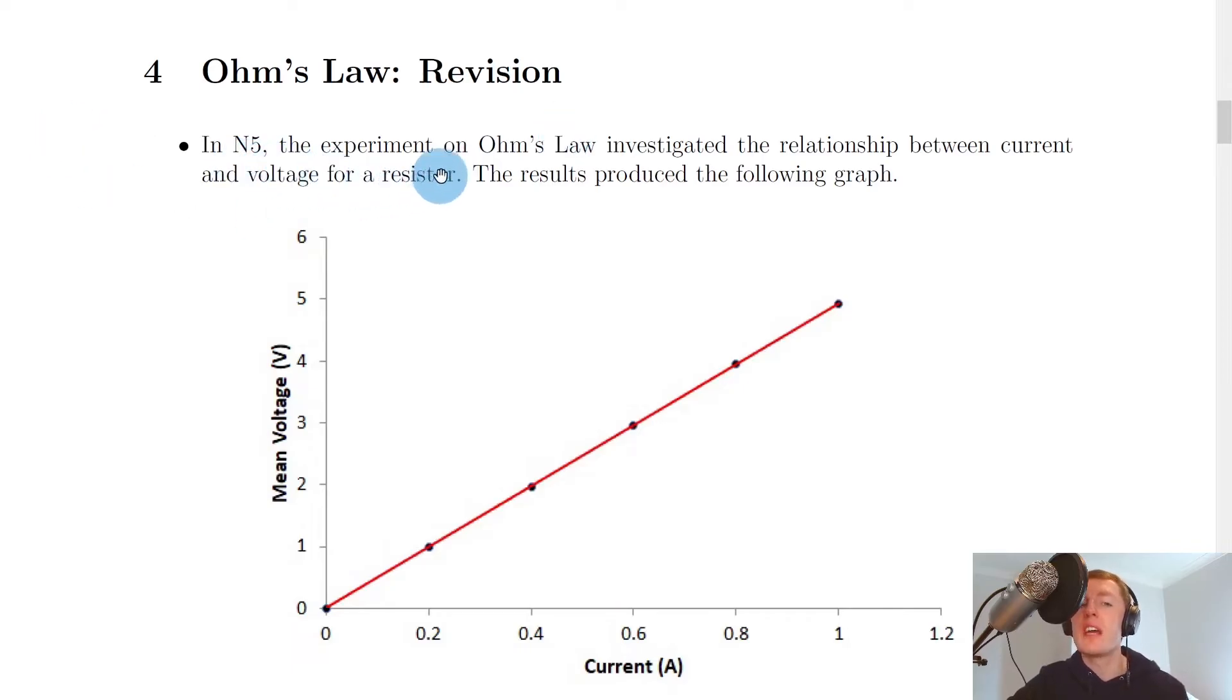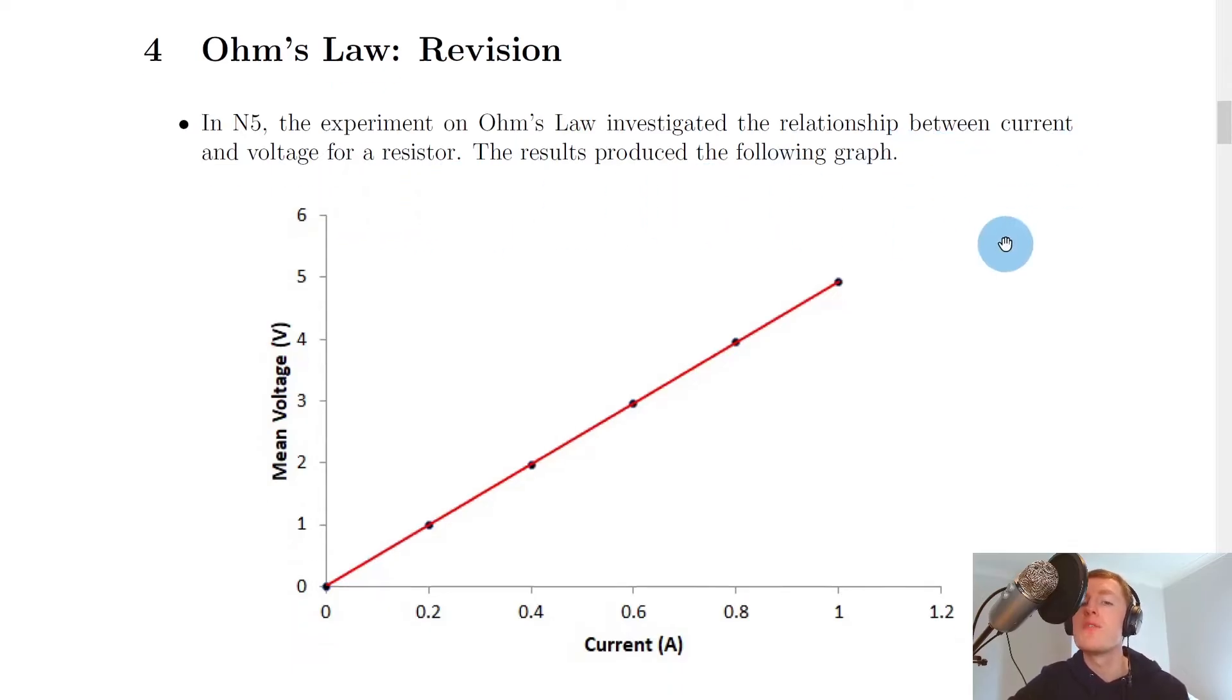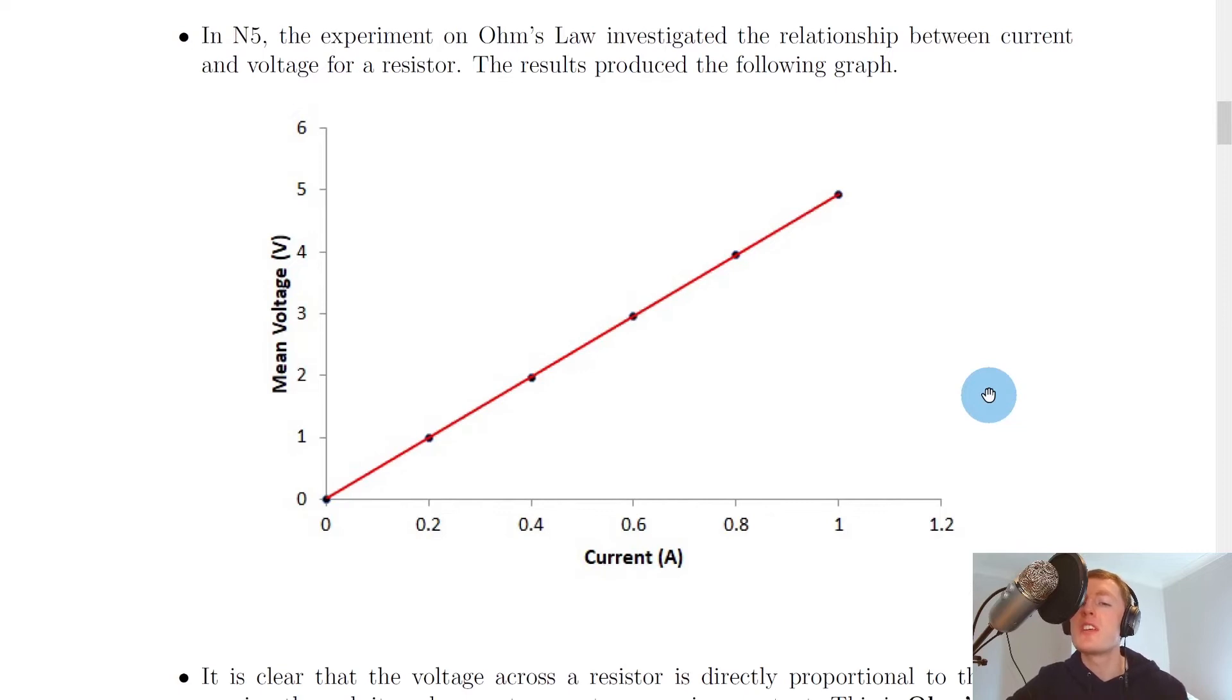In National 5, the experiment on Ohm's Law investigated the relationship between current and voltage for a resistor. The results produced the following graph. You might remember doing this experiment where you change the current passing through a resistor and you write down the voltage or potential difference across that resistor. And if you plot the results in a graph, you get something that looks like this.